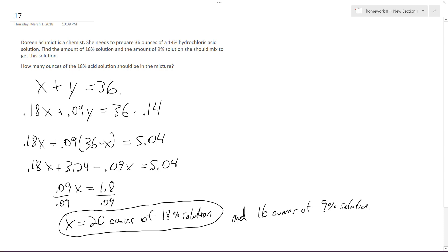So X plus Y equals 36 is one equation, and then what I have here is the coefficient of the concentration in each bottle, so 18%, 9%, and then 36 times 14% gives me the total pure HCl in that 36 ounces.